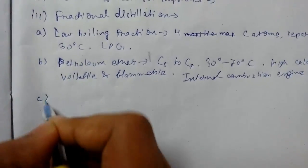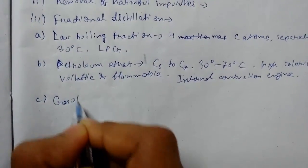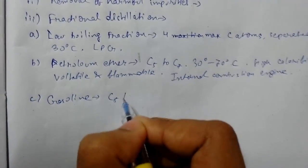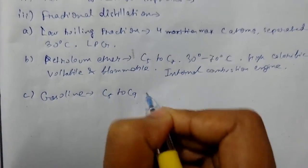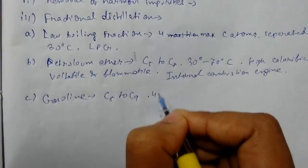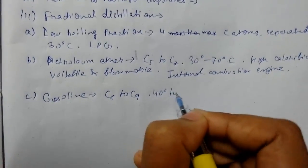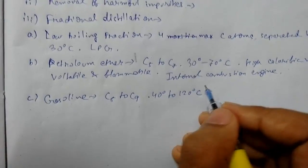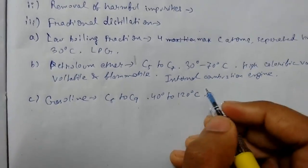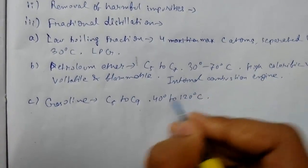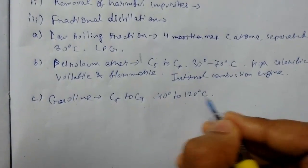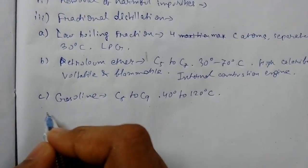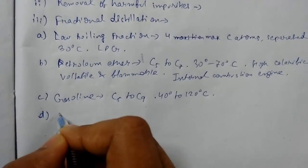Next we have gasoline, which comprises carbon atoms of C5 to C9 or C10, with a boiling point of 40 to 120 degrees Celsius. It is mainly used as a solvent, has a high calorific value, and is highly flammable.